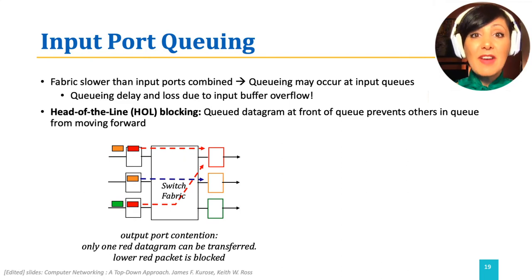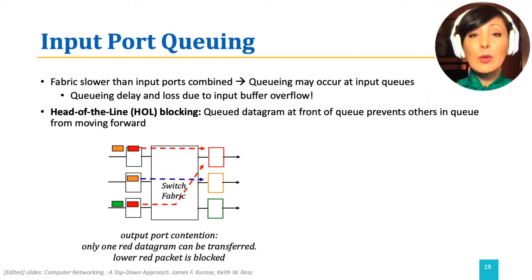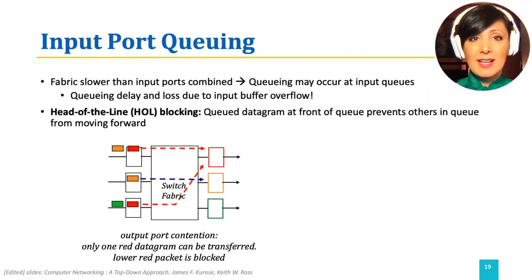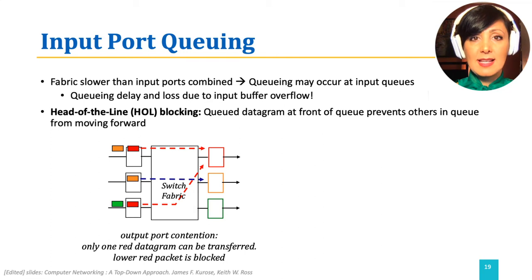If the switch fabric is not fast enough to handle the traffic coming at the input ports, we need buffers at the input ports to queue the incoming packets before they are switched. Queuing delay can happen due to increasing the size of this queue at the input port. Loss can also happen due to buffer overflow.